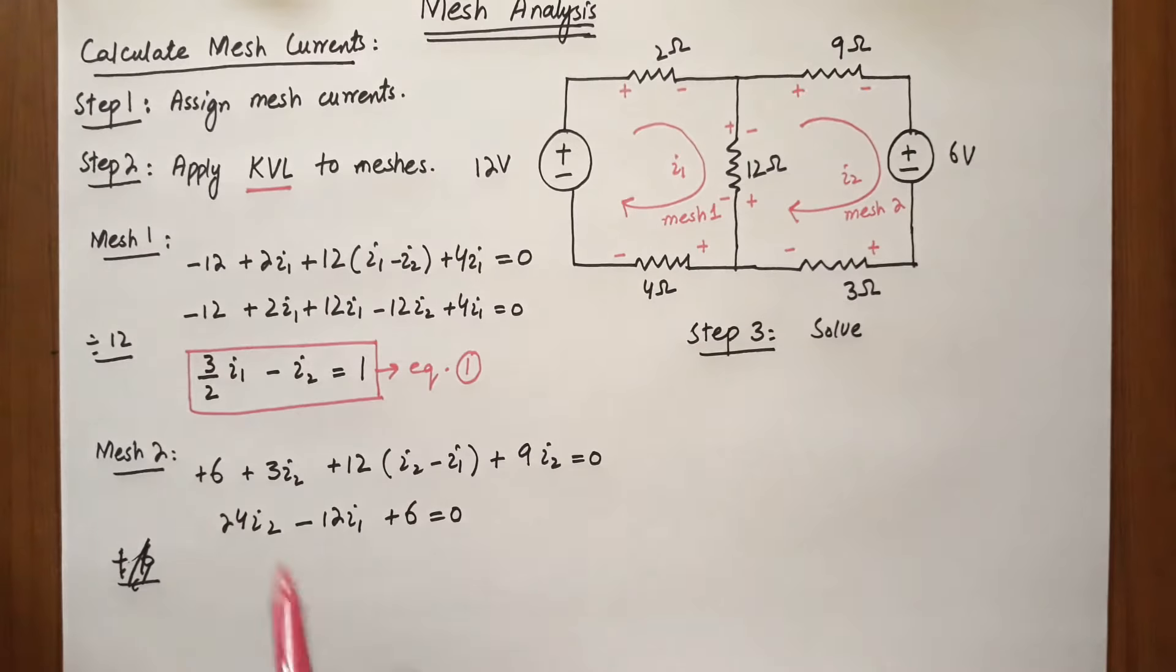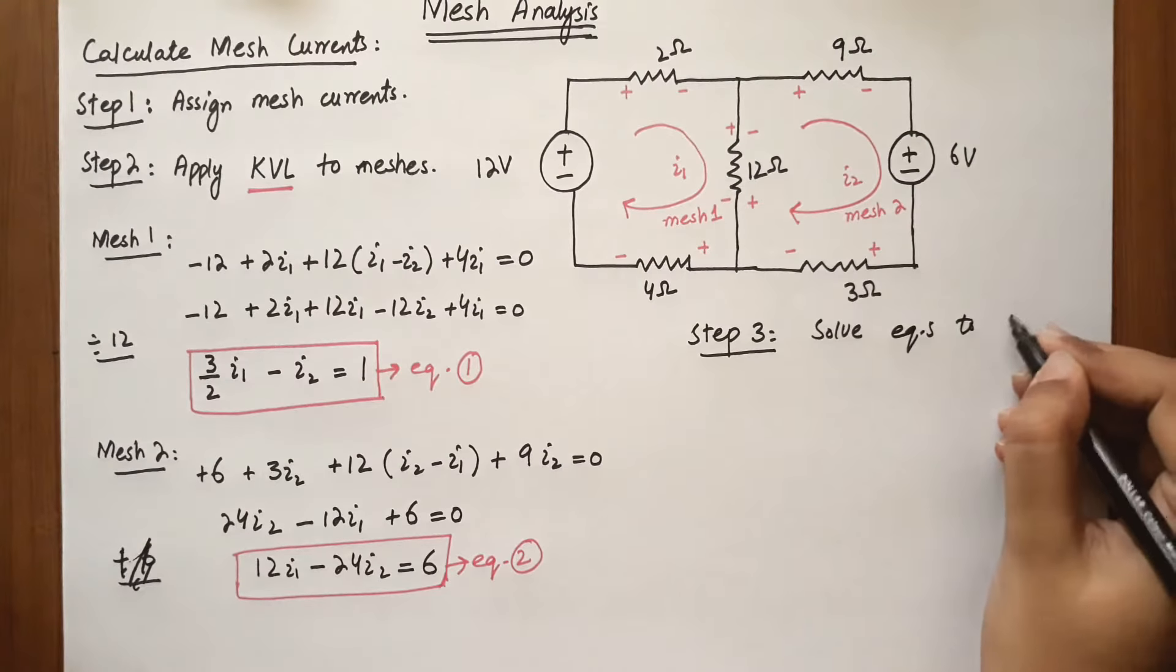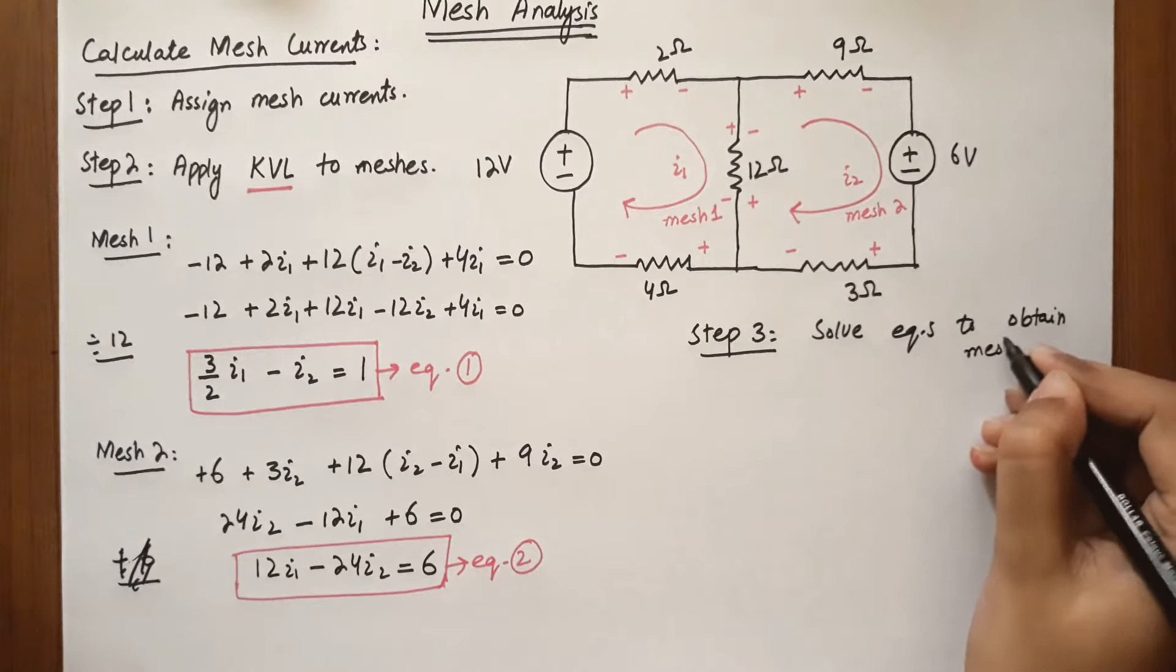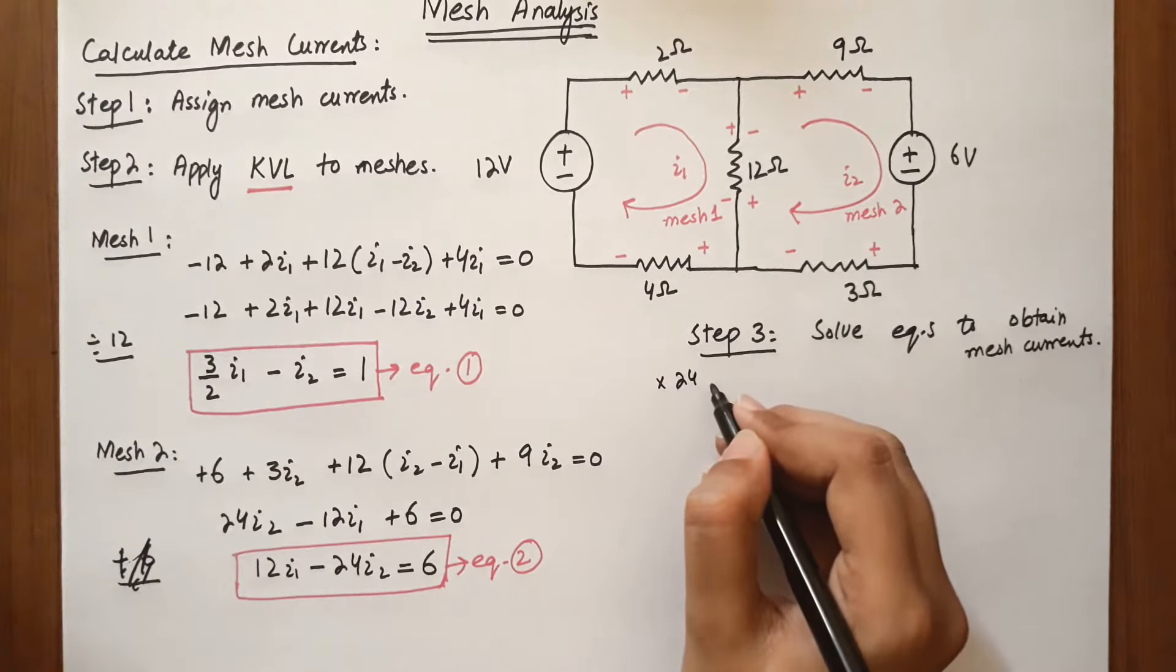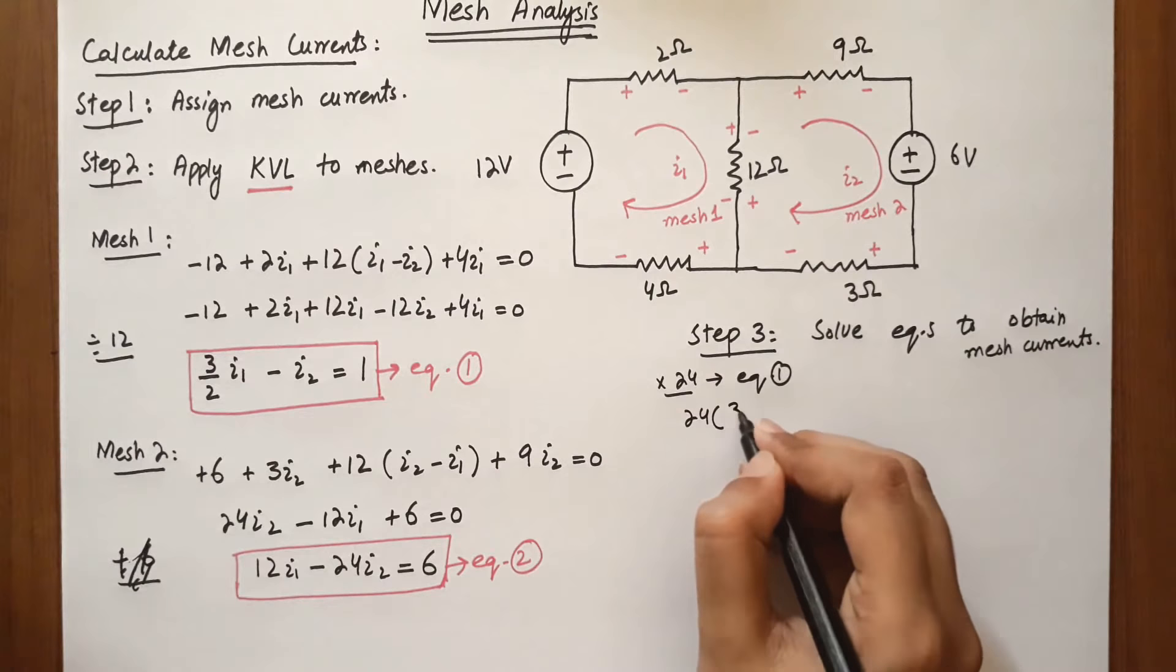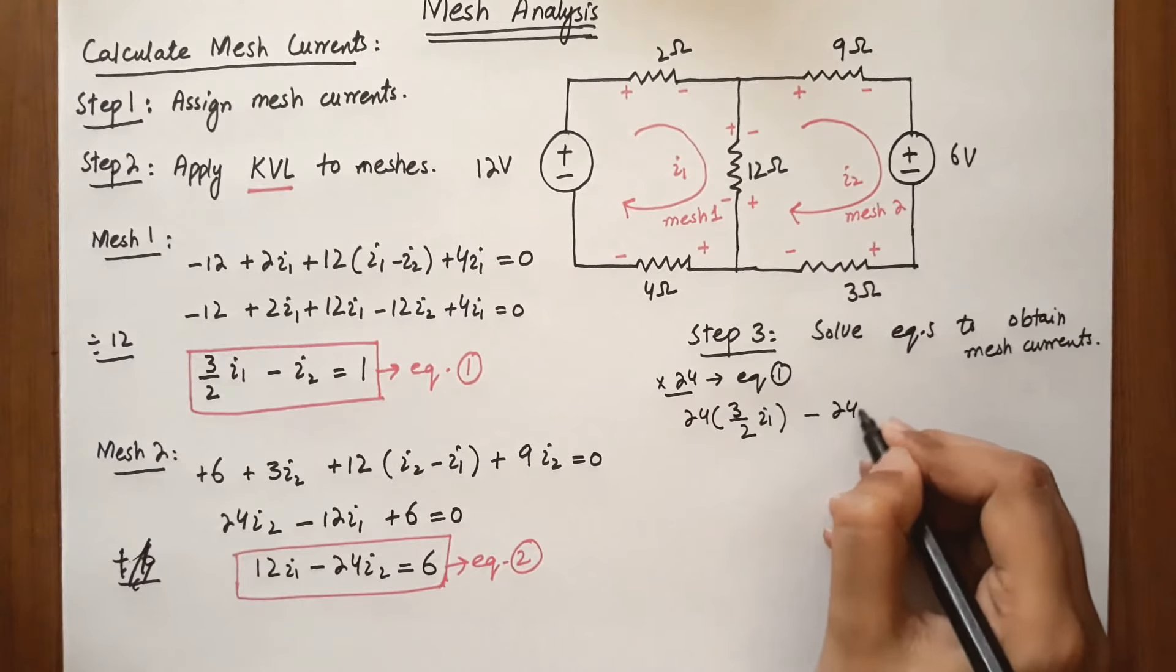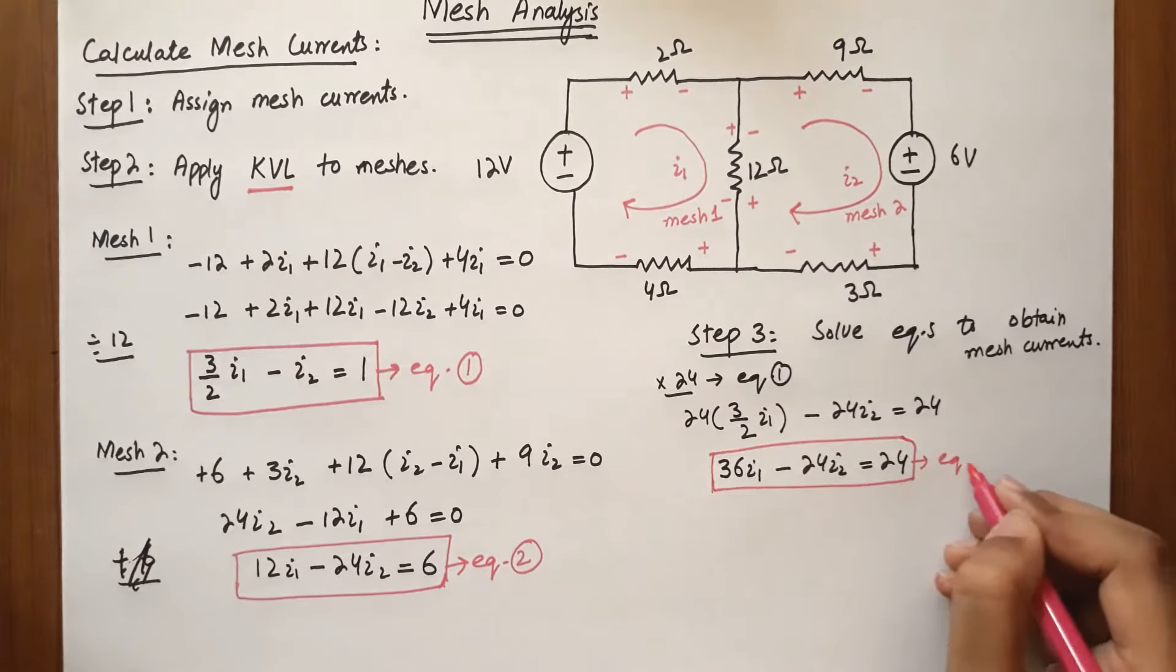Simplifying the mesh 2 equation gives us equation 2. We now have two equations, equation 1 and equation 2. In the third step, we solve these to obtain mesh currents I1 and I2. Multiplying equation 1 by 24 gives 72I1 minus 24I2 equals 6, which is equation 3.